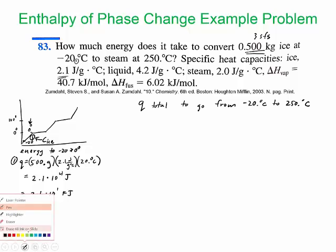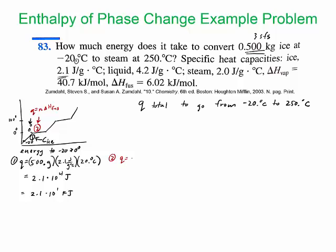Step two is right here. We need to melt this 0.5 kilograms of ice. First we have to take it to zero, next we have to melt it. For phase changes we're going to use Q equals n delta H fusion.